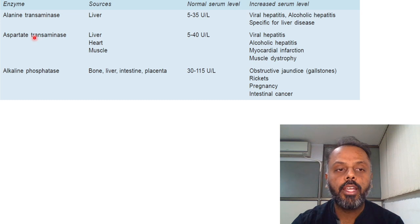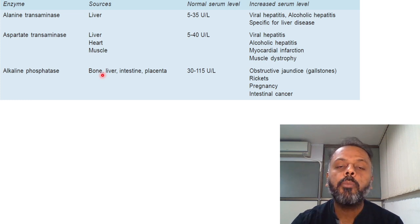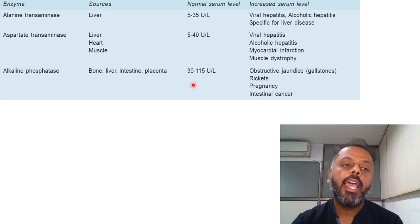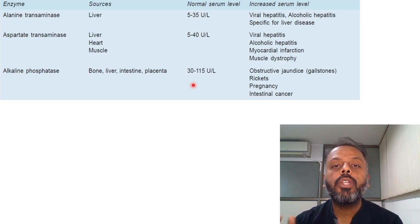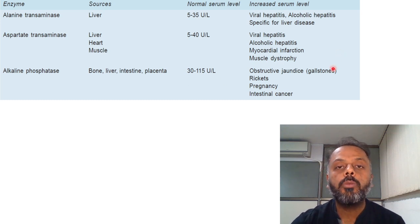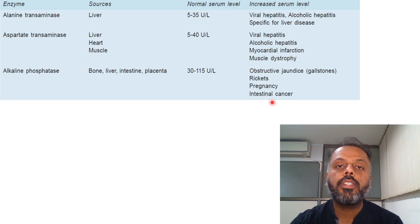The third enzyme is Alkaline Phosphatase, or ALP. It is a non-specific enzyme that hydrolyzes aliphatic or aromatic compounds and works at alkaline pH of 9 to 10. Sources are bone, liver, intestine, and placenta. The normal level is 30 to 150 units per litre. Its level increases in obstructive jaundice — caused by gallstones, carcinoma of head of pancreas, or bile duct stricture — as well as in bone diseases like rickets or Paget's disease, pregnancy, and intestinal cancer.